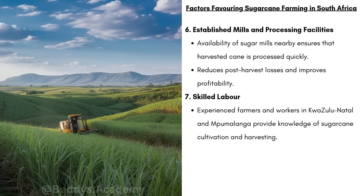South Africa has established mills and processing facilities. The availability of sugar mills nearby ensures that harvested cane is processed quickly. Sugarcane loses most of its sugar content the longer it sits after being cut, so it's important to have mills close by to crush and process it while it's still fresh. Established mills reduce post-harvest losses and improve profitability because less cane is wasted. The last favorable factor is skilled labor — experienced farmers and workers in KwaZulu-Natal and Mpumalanga provide knowledge of sugarcane cultivation and harvesting.